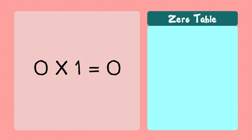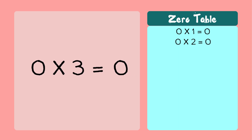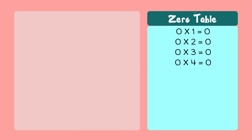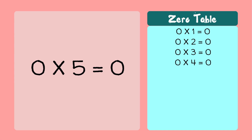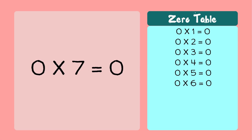Zero one's a zero. Zero two's a zero. Zero three's a zero. Zero four's a zero. Zero five's a zero. Zero six's a zero.